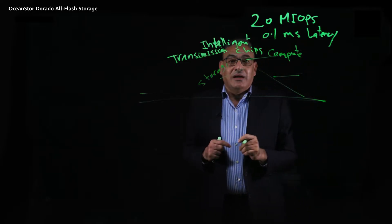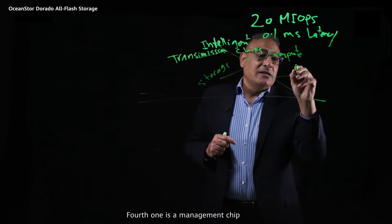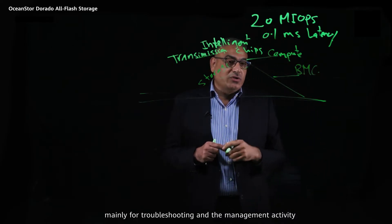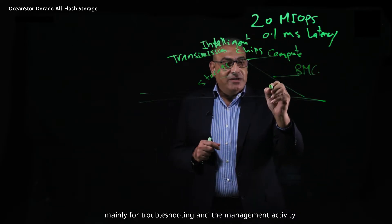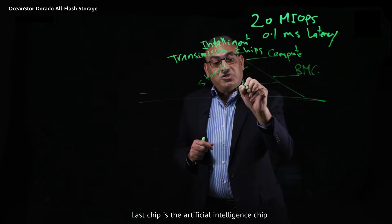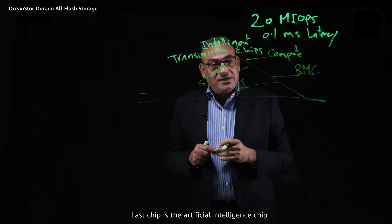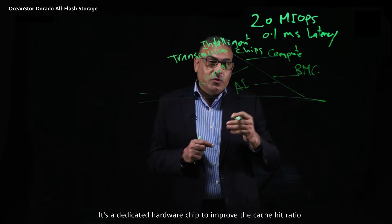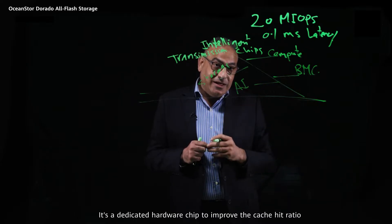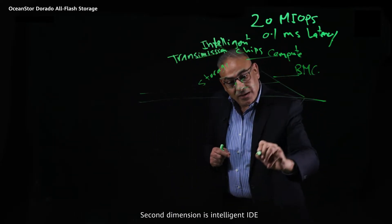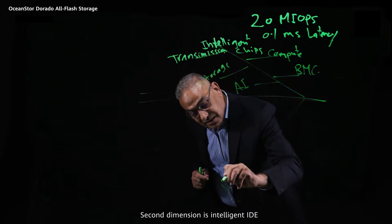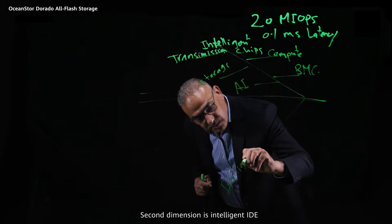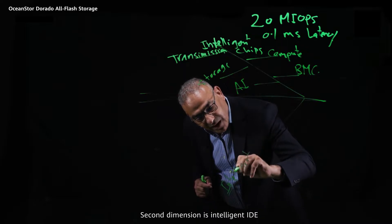The fourth chip is the management chip, mainly for troubleshooting and management activity. The last chip is the artificial intelligence chip — a dedicated hardware chip to improve the cache hit ratio.